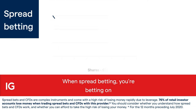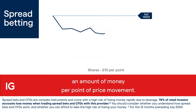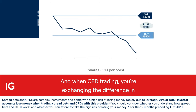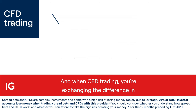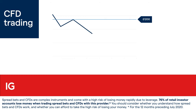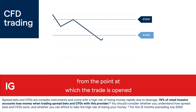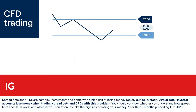When spread betting, you're betting on an amount of money per point of price movement. When CFD trading, you're exchanging the difference in price from the point at which the trade is opened to when it's closed.